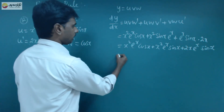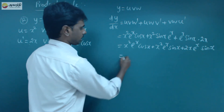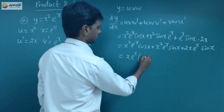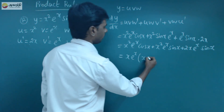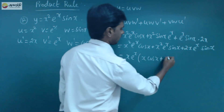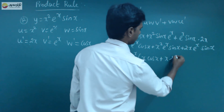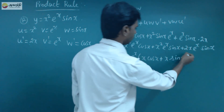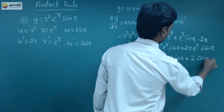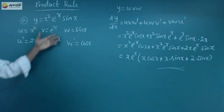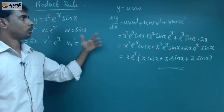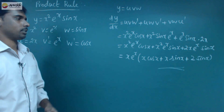Here the common terms on both sides: x squared is common, e power x is common. So we get x squared e power x times cos x plus sin x, plus 2x times e power x times sin x. Simple — one of the three functions differentiated and combined with the other two, applied across all terms.